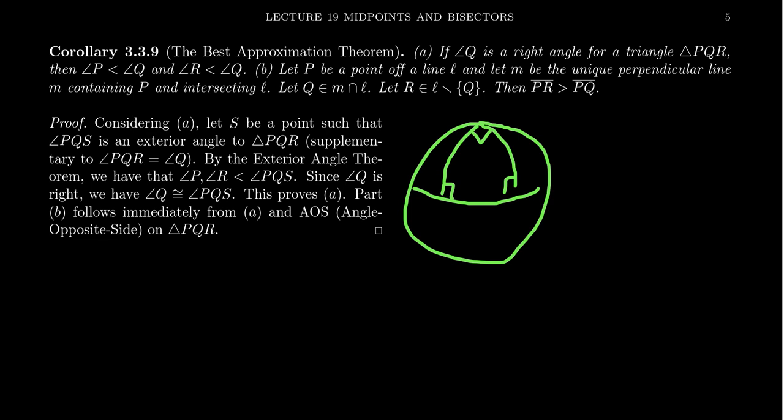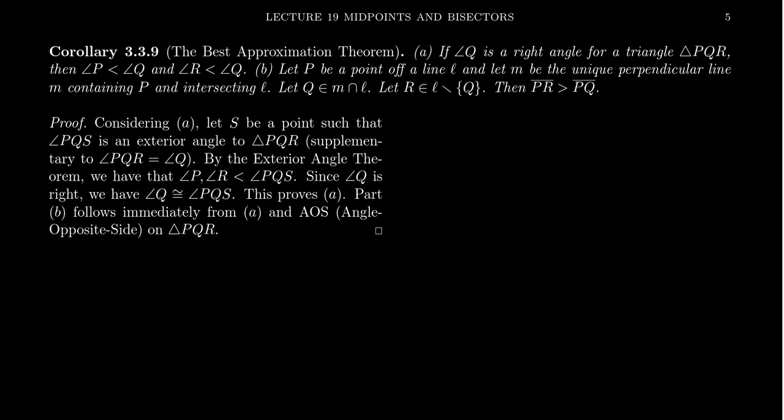In particular, in elliptic geometry you don't have the alternate interior angle theorem. From the alternate interior angle theorem we get exterior angle theorems, the midpoint theorem, the bisector theorem, and the angle opposite side relation. All of these things are valid in congruence geometry, not in elliptic geometry. But in a congruence geometry, the right angle is in fact the largest angle in the triangle.